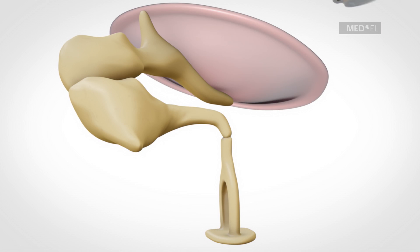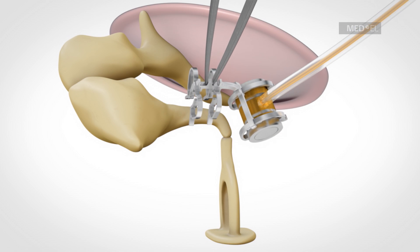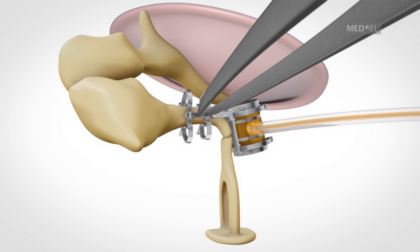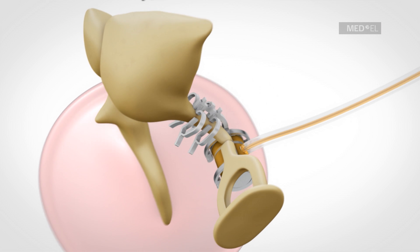The INCUS LP coupler is attached to the long process of the INCUS. It has an improved coupling and an easier handling without the need for crimping.